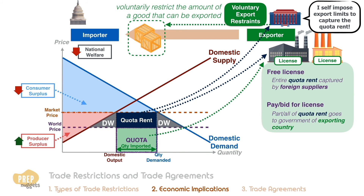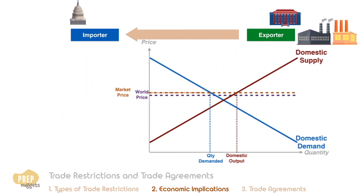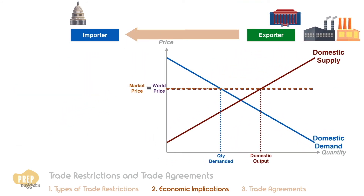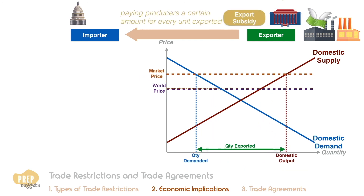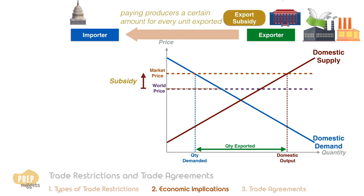Lastly, export subsidies affect the exporting country more than the importing country. A country will export a good if, at the world price, the quantity demanded by domestic consumers is lower than what producers can supply. By subsidizing producers for exporting, producers can produce more to export, so the domestic price increases by the subsidy amount.